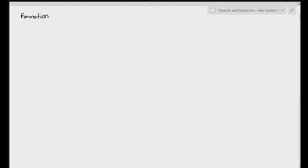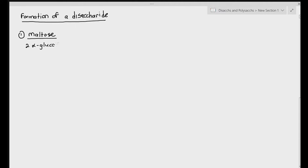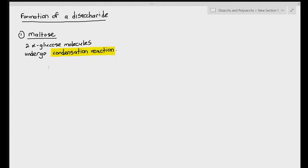Now that we know the two types of disaccharides — maltose and sucrose — we have to talk about their formation. How are you able to form maltose and sucrose from monosaccharides? Maltose is made up of two alpha glucose molecules undergoing a condensation reaction. In biological molecules, condensation reaction refers to a chemical process where water molecules are removed from the molecules.